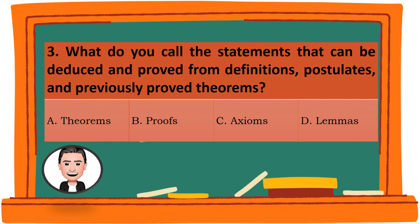Question 3. What do you call the statements that can be deduced and proved from definitions, postulates, and previously proved theorems? A. Theorems. B. Proof. C. Axioms. D. Lemmas. The correct answer is C. Axioms.